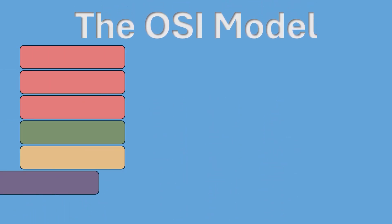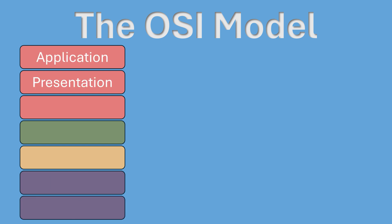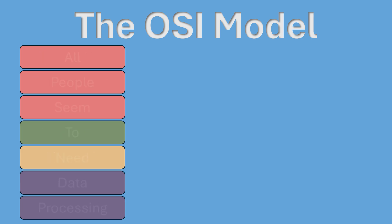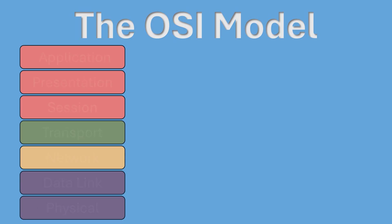The OSI model is made up of seven layers: the application layer, the presentation layer, the session layer, the transport layer, the network layer, the data link layer, and finally the physical layer. A helpful way to remember this is the phrase: 'All people seem to need data processing.' Let's break down each layer and the devices that operate on them.